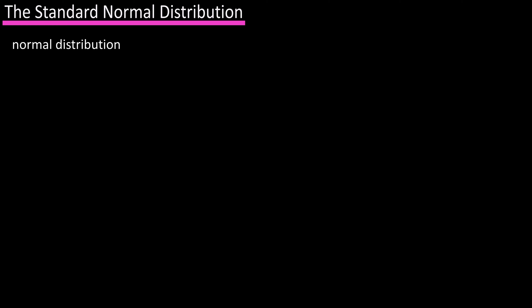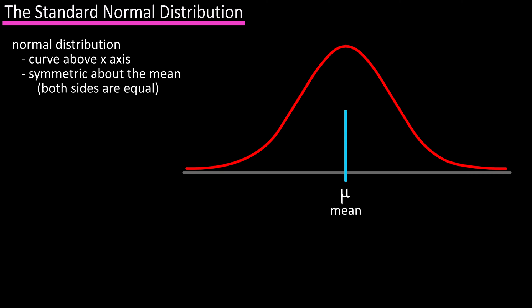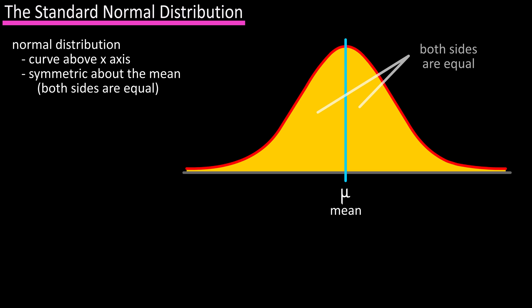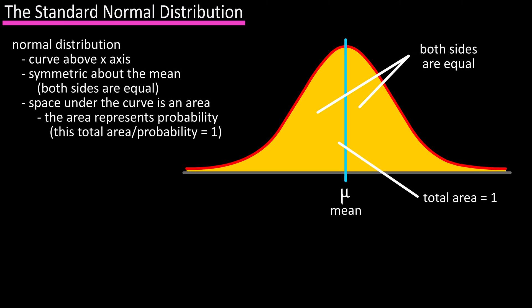In a previous video, we discussed what a normal distribution is. It's a graph or a curve above the x-axis that is symmetrical about the mean. If we draw a line right down the middle representing the mean, both sides are equal in shape and area under the curve. The space under the curve is an area, and this area actually represents the probability, and this area is equal to one.